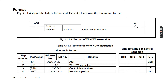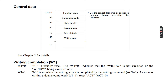You can see the function code defines whatever function we need to perform. The completion code will be by default — we will see that in the next slide. Data length, data number, and data attribute — all this information is standard. Whether I want to read data or write data, the data number, data length, and data attribute are all standard as defined in the manual.